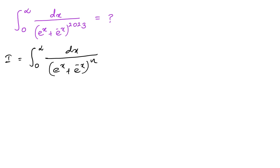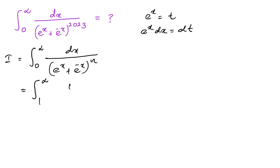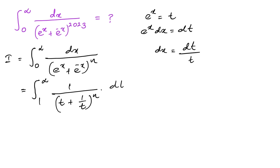Let us take the substitution eˣ = t. Differentiating, eˣ dx = dt. We change the boundaries: when x approaches 0, t approaches 1; when x approaches infinity, t approaches infinity. So we have the integral from 1 to infinity of 1 over (t + 1/t)^n times dt/t, since dx = dt/t.